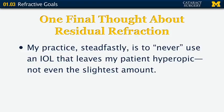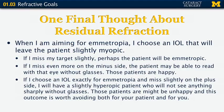One other thing I want to leave with you: in my practice, I never use a lens that leaves my patients hyperopic, not even the slightest amount. If I aim for emmetropia, I'll choose an intraocular lens that will leave the patient perhaps slightly myopic. If I miss my target slightly, the patient might end up emmetropic. If I miss even more on the minus side, the patient may be able to read with that eye without glasses — those patients are invariably happy. But if I miss slightly on the hyperopic side, the patient will not see anything sharply without spectacles, and those patients often become very unhappy.